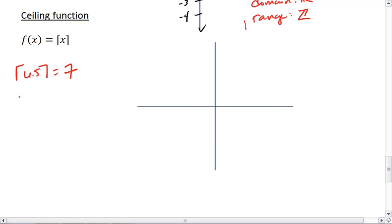If I plugged in 3.2, the ceiling function gives me 4. If I plug in negative 2.1, the ceiling function gives me, or let's do this, negative 2.6. The ceiling function gives me negative 2.